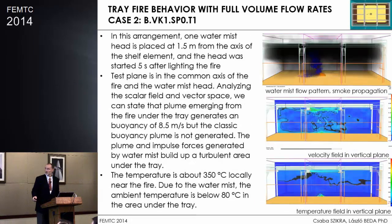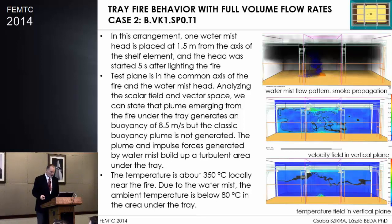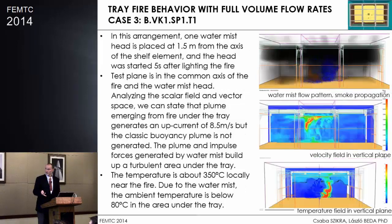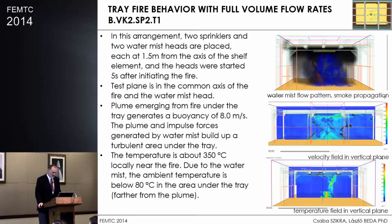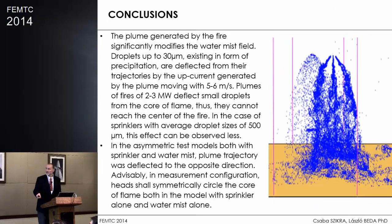In the second arrangement, we did the same thing with water mist instead of sprinkler. If we compare with the previous case, there is no such pronounced plume as before — so it works a little differently. We can state that because of the plume, most of the particles cannot get closer to the fire. In another case, two heads were on — one sprinkler and one water mist head — in a non-symmetrical arrangement. Finally, a symmetrical case had four heads on: two sprinkler heads and two water mist heads.